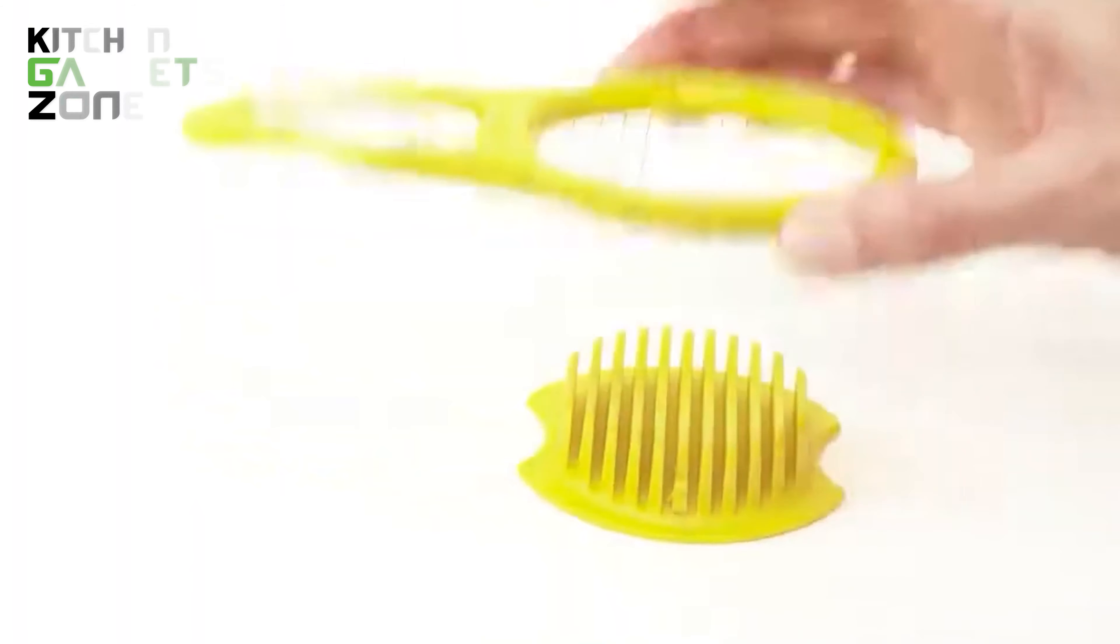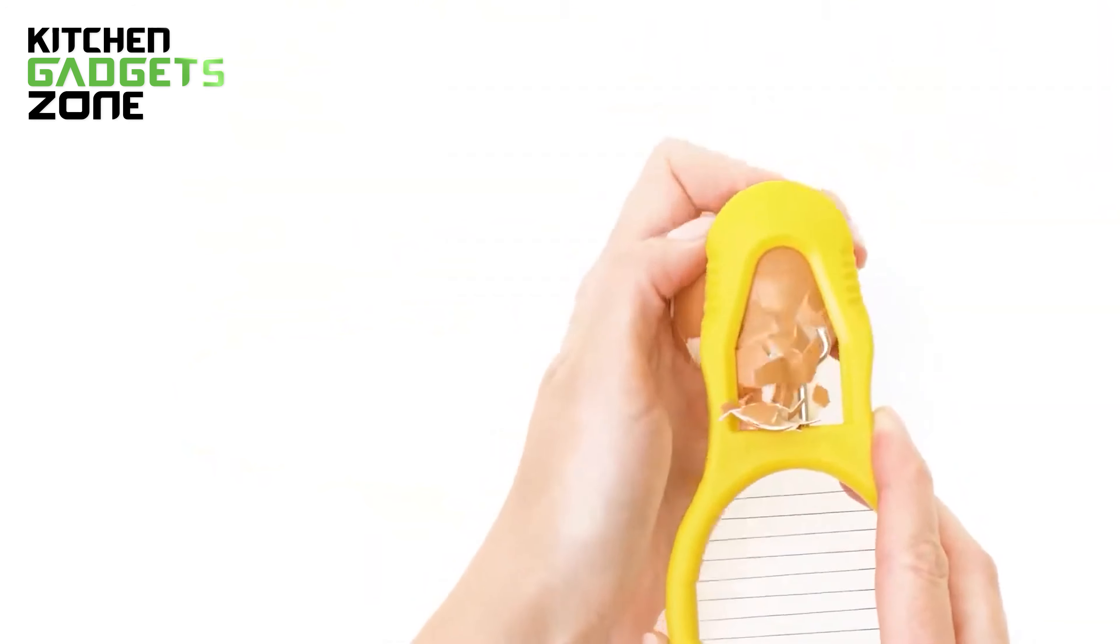But the convenience doesn't stop there. Eggler's compact, slimline design is dishwasher-safe and stores flat in a drawer, so it's always within reach when you need it.